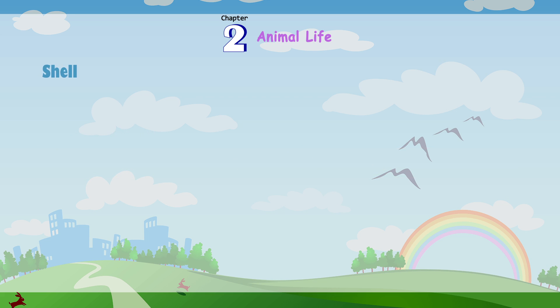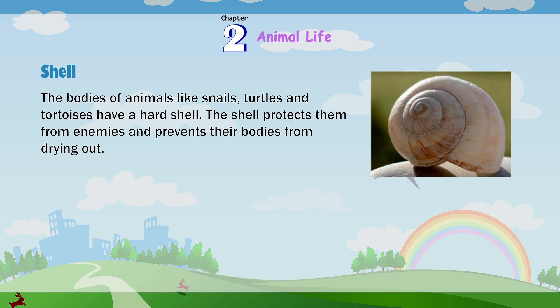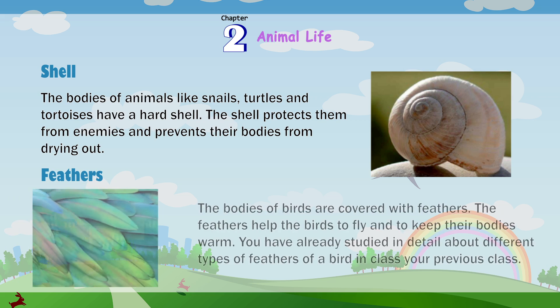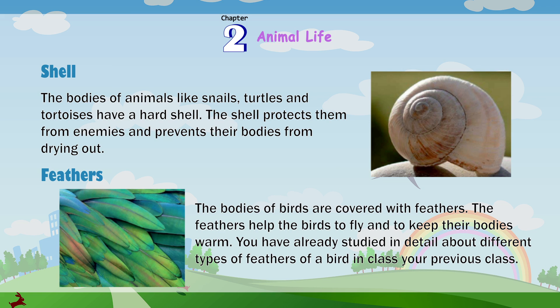Shell. Animals like snails, turtles and tortoises have a hard shell. The shell protects them from enemies and prevents their bodies from drying out. Feathers. The bodies of birds are covered with feathers. The feathers help birds to fly and to keep their bodies warm. Different types of feathers of a bird were studied in detail in your previous class.